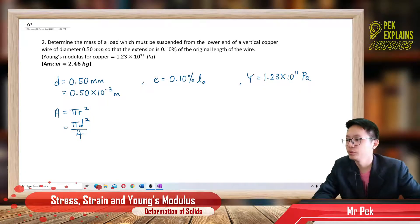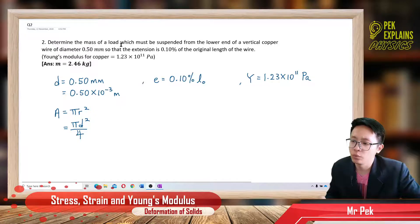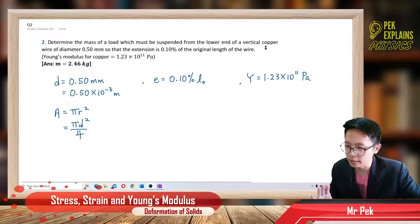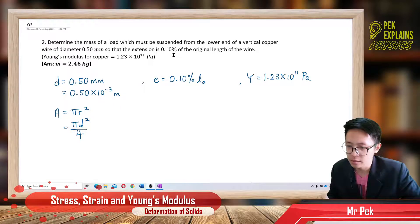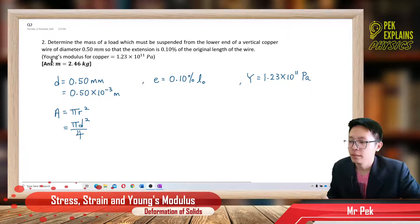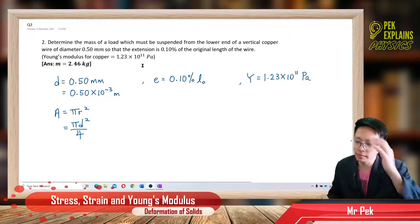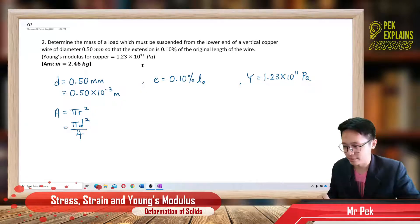Welcome to question 2. Determine the mass of a load which must be suspended from the lower end of a vertical copper wire of diameter 0.5 mm so that the extension is 0.1% of the original length of the wire, given Young's modulus for copper. What's the mass?